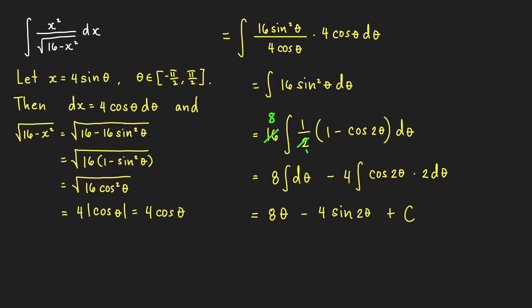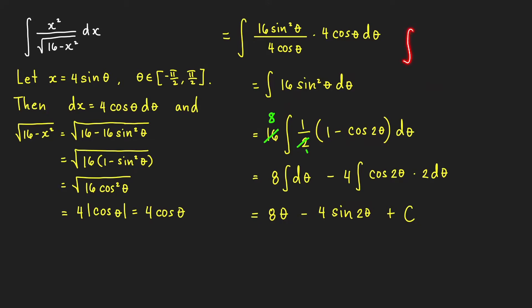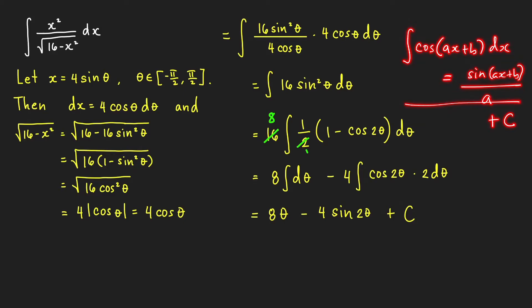We can find an antiderivative of 1 minus cosine 2 theta. The antiderivative of 1 is theta, and the antiderivative of cosine 2 theta is sine of 2 theta over 2. Multiplying by 8, we get 4 sine 2 theta. It is helpful to know that the integral of cosine of a linear function ax plus b dx equals sine of ax plus b over a, where a is not equal to zero, plus c. If you don't know this formula, you can use substitution to evaluate the integral of cosine 2 theta d theta.